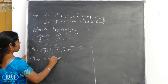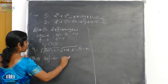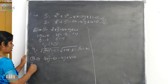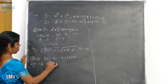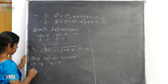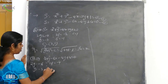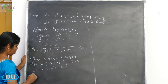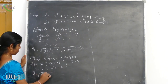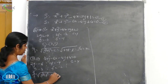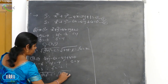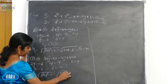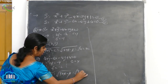The second circle is x squared plus y squared minus 6x minus 4y plus 4 is equal to 0. So 2g is equal to minus 6, g is equal to minus 3. 2f is equal to minus 4, f is equal to minus 2. C is equal to 4. R2 is equal to square root of g squared plus f squared minus c, which is root of 9 plus 4 minus 4, equal to 3.